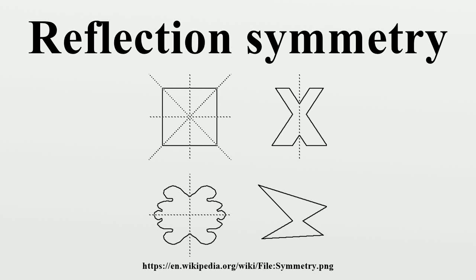Reflection symmetry, line symmetry, mirror symmetry, mirror image symmetry, or bilateral symmetry is symmetry with respect to reflection. That is, a figure which does not change upon undergoing a reflection has reflectional symmetry.